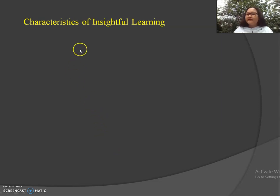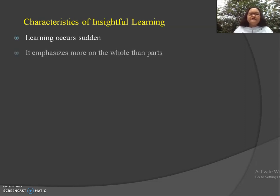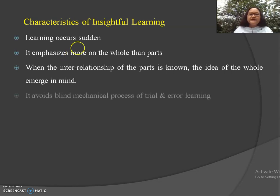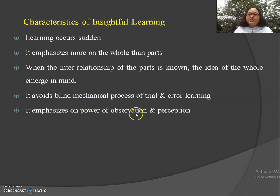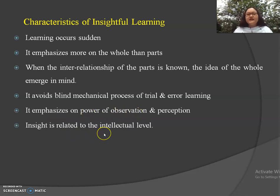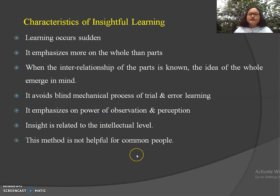The characteristics of insightful learning: learning occurs suddenly, just like a flash of light. It emphasizes more on the whole than the parts. When the interrelationship of the parts is known, the idea of the whole emerges in the mind. It avoids the blind mechanical process of trial and error learning. It emphasizes the power of observation and perception. Insight is related to the intellectual level, and this method is not generally helpful for common people as it requires a degree of observation and perception.